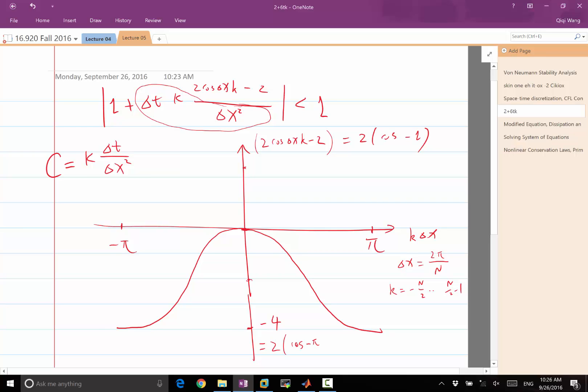Which is equal to 2 times cosine of minus pi. This is achieved when k is equal to minus n over 2 minus 1. Cosine minus pi is minus 1, another minus 1 minus 2 times 2, it's minus 4.